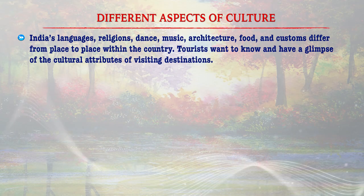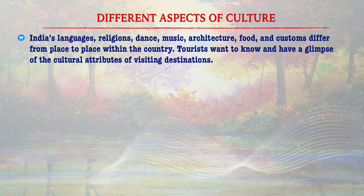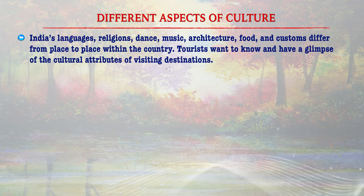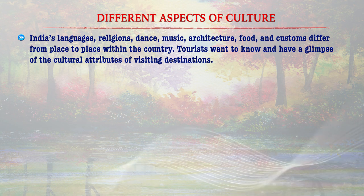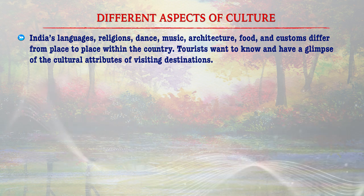The next subtopic is different aspects of culture. India's languages, religions, dance, music, architecture, food and customs differ from place to place within the country. India is a land of diverse cultures with different cuisines, food, architecture and music. Tourists want to know and have a glimpse of the cultural attributes of destinations they visit. Fairs and festivals are events through which we can see a very large part of our culture. We can list two major types of festivals: those related to important national events, and those related to religion.